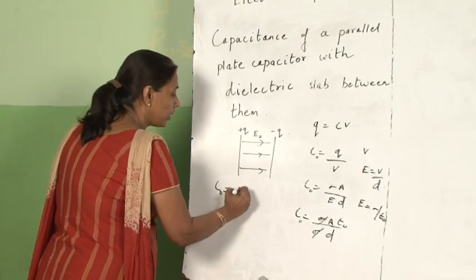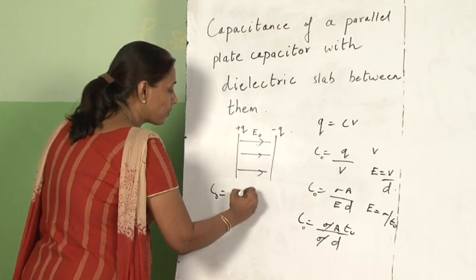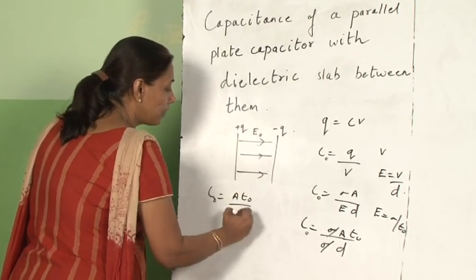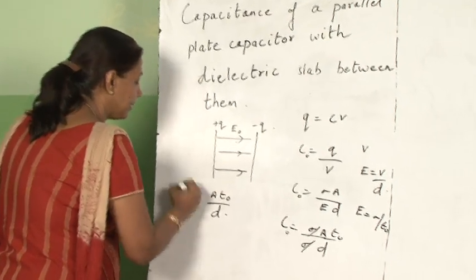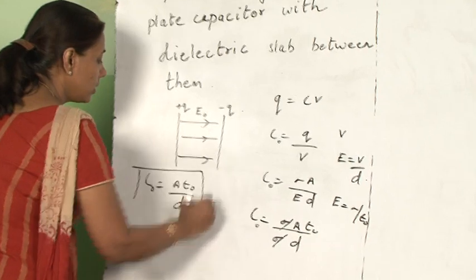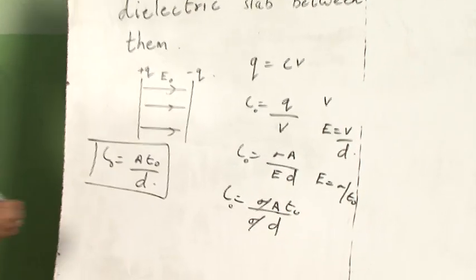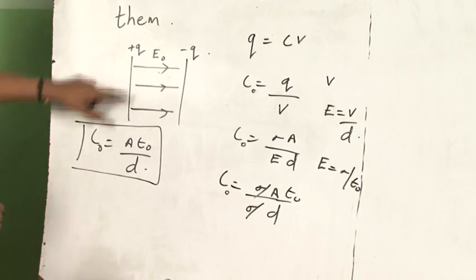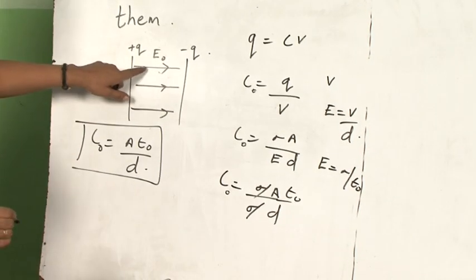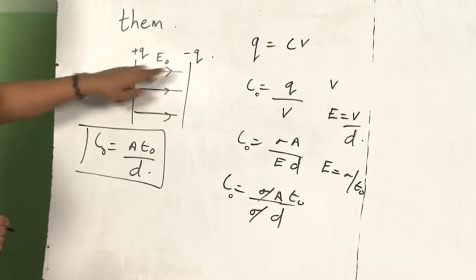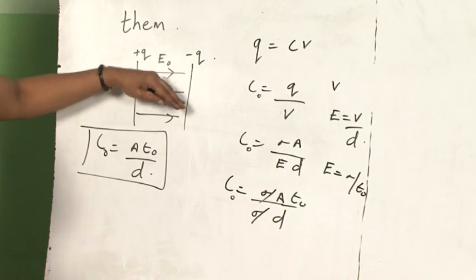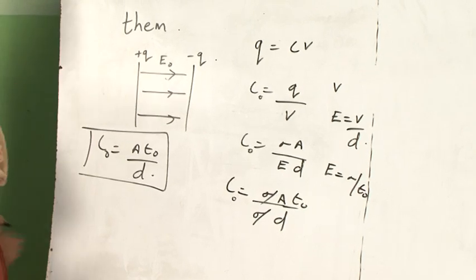C0 will be equal to A epsilon naught by D. This is an expression for the capacitance of a parallel plate capacitor without any medium.